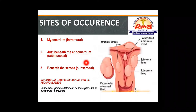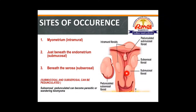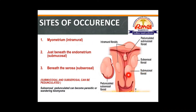If leiomyomas are present just beneath the endometrial lining, they are called submucosal leiomyomas or submucosal fibroids. Submucosal fibroids can be sessile (without a stalk) or pedunculated (with a stalk).